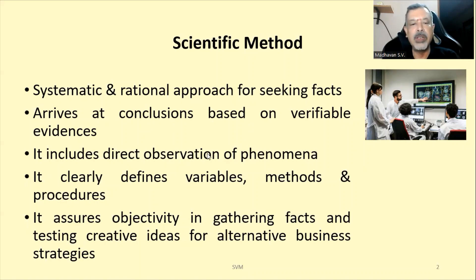Scientific method also includes direct observation of phenomena or events. It clearly defines variables, methods, and procedures — how things are defined or how things are going to be taken up. It assures objectivity in gathering facts and testing creative ideas for alternative business strategies.